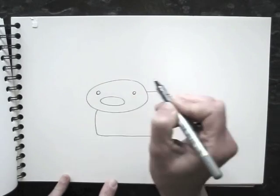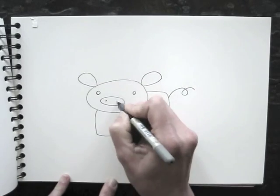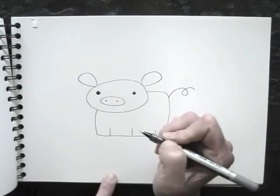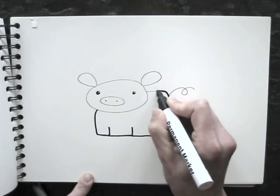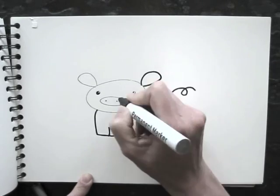You can use ovals and a rounded square for a pig. All we need now is someone to color this pink.